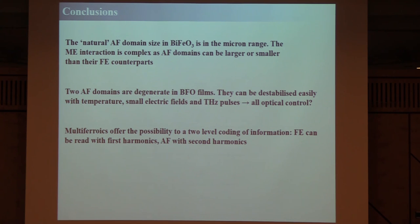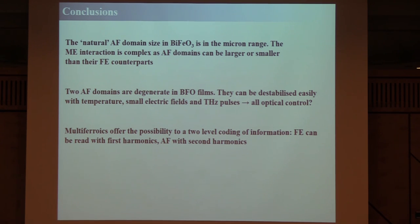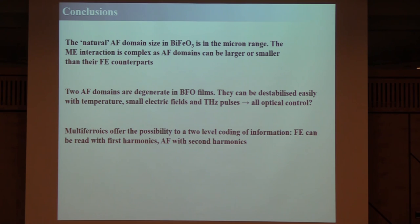In multiferroics you also have the possibility to write information at two levels: ferroelectrically and antiferromagnetically. If you look with the first harmonic, you see the ferroelectric writing; look with the second harmonic and you see the antiferromagnetic writing. So you could encode two levels of information — maybe useful for secure communication. It may be useless, but it's kind of fun to have these two levels of writing.